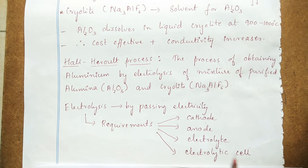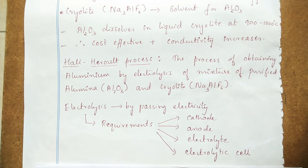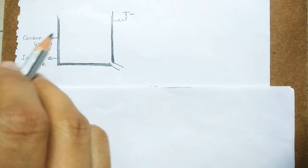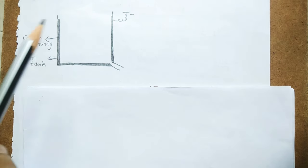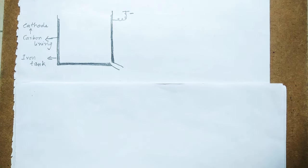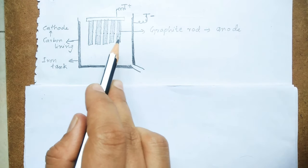We need two electrodes: one is cathode and the other is anode. We also need an electrolyte, which provides an electrically conducting medium, and an electrolytic cell. The electrolytic cell used in this process is an iron tank. The inner wall of this tank is lined with carbon, and this carbon lining is connected to the negative terminal of the battery, so it acts as the negative electrode or cathode. We also have a number of graphite rods attached to a copper clamp.